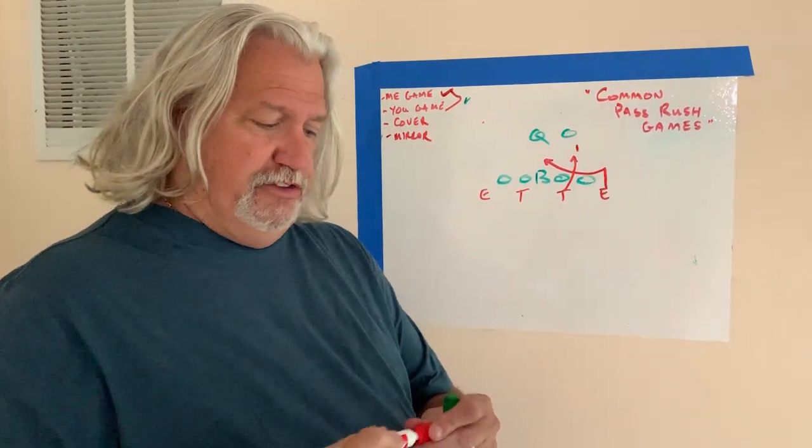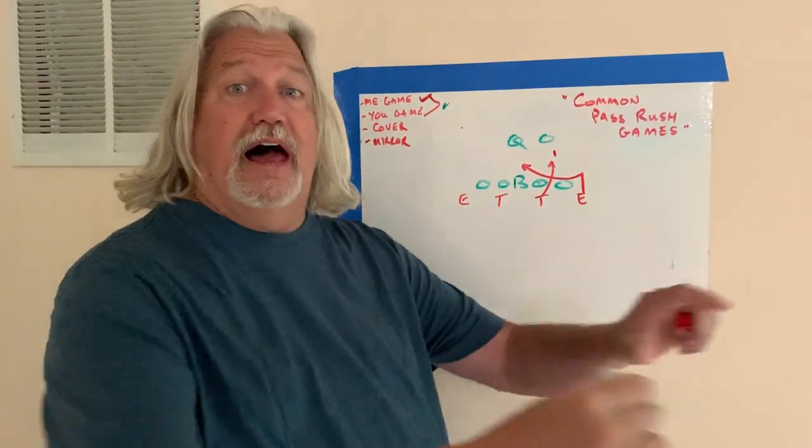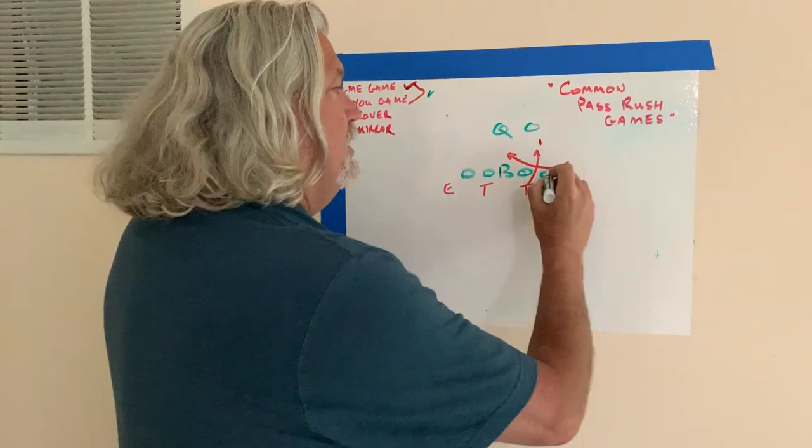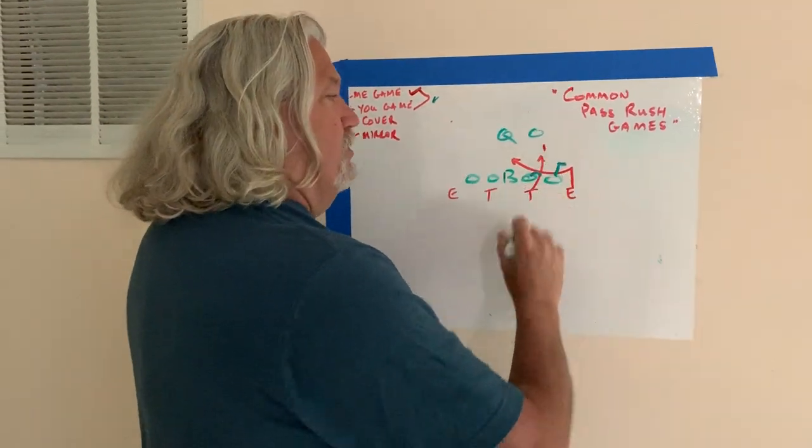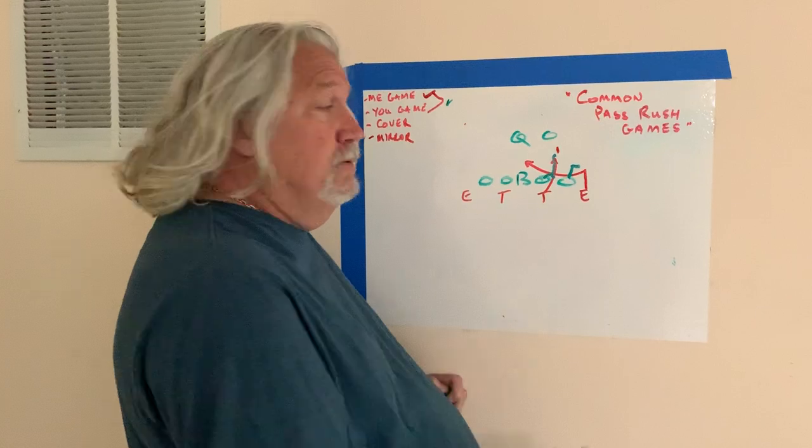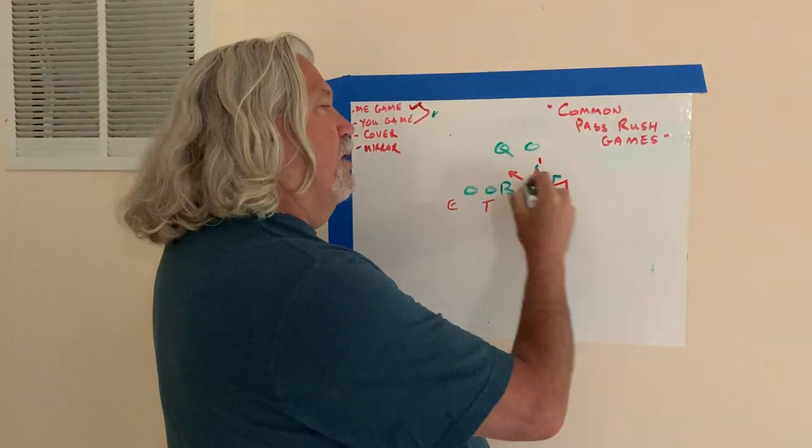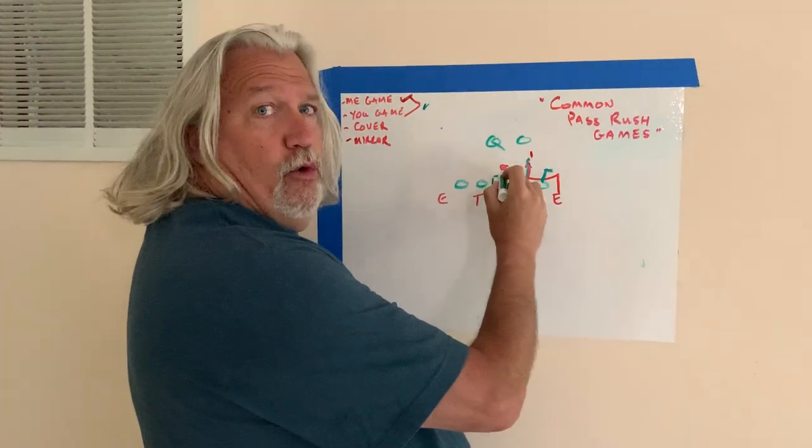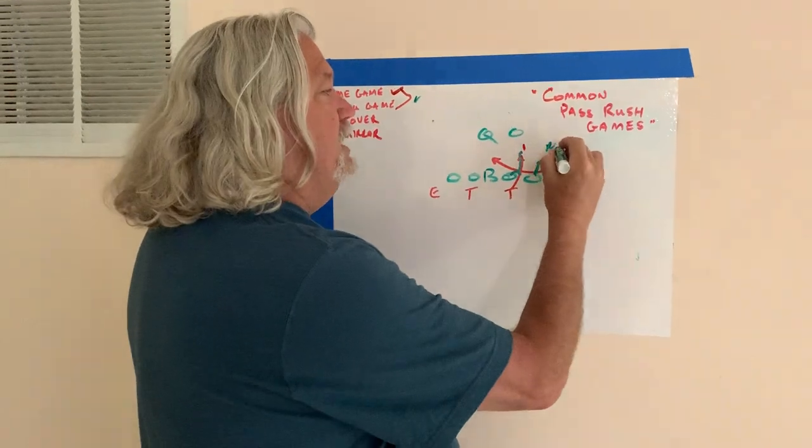It's really good versus the teams that aren't in slide or zone protection, in man protection, because the guard will get pulled up with the tackle and now it leaves your end up and under to go get the quarterback. That's when a me game is excellent.